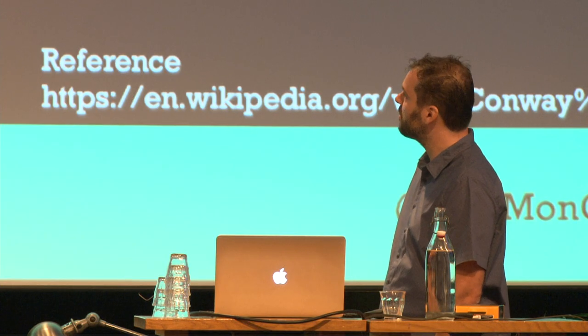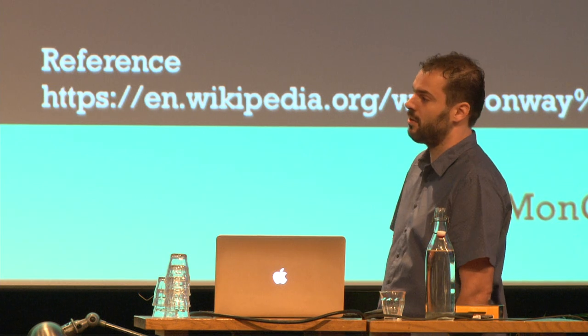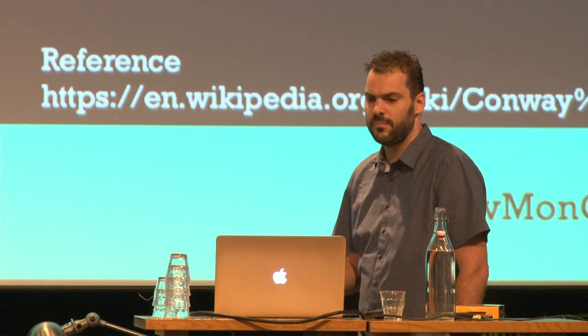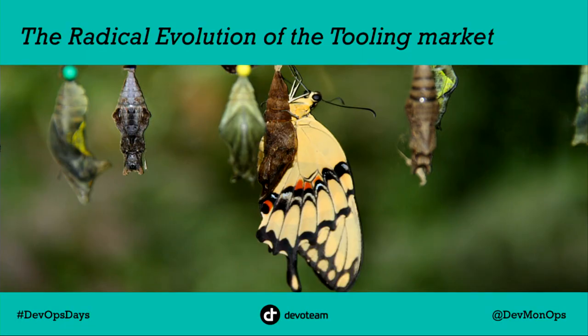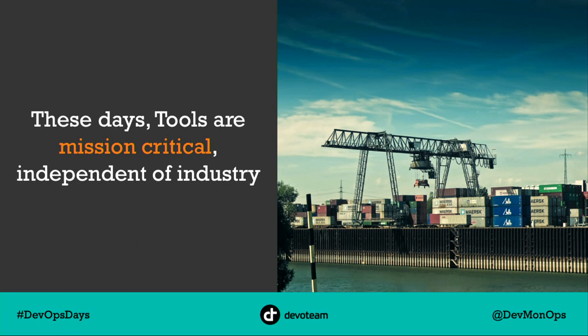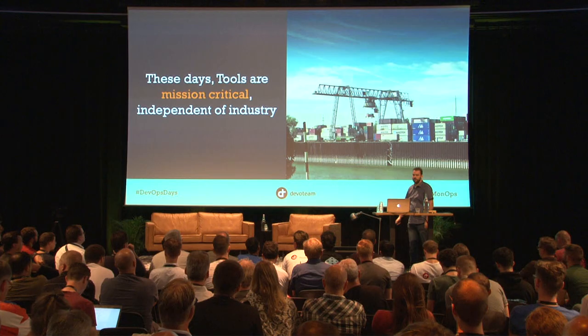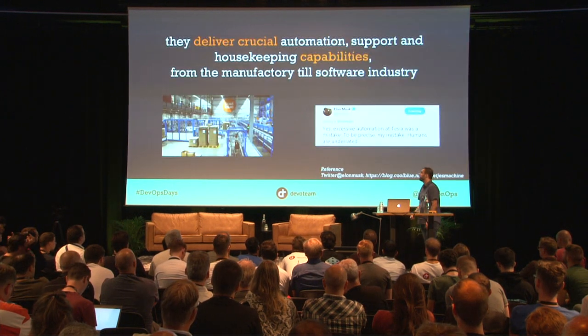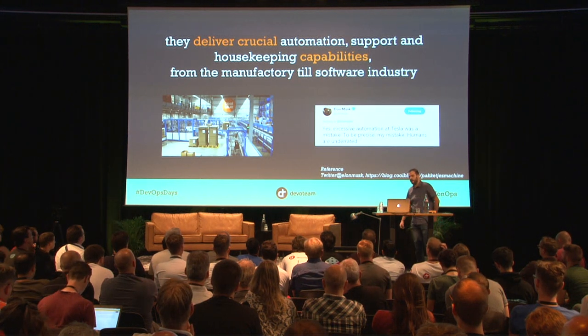So what changed, and what has changed in these years when DevOps came around? It was a real radical evolution of the tooling market. It's not only the tooling that matters — it's mission critical, and it's really independent of every industry. Whether it's manufacturing, logistics, or an IT company, it delivers crucial automation, support, and housekeeping capabilities.